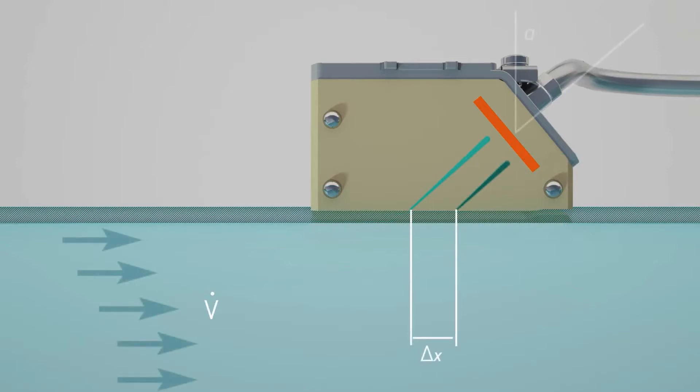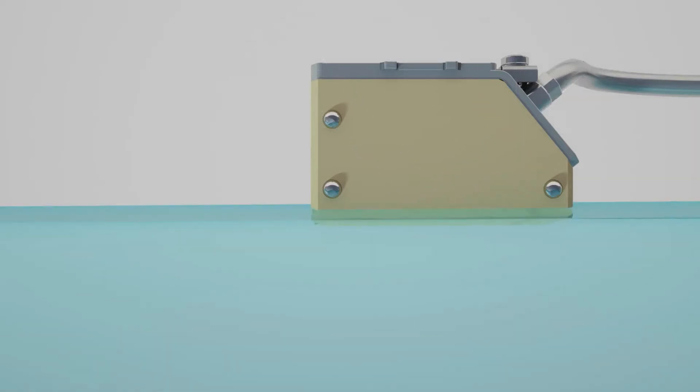Due to the angle alpha of the transducer wedge, this shift causes a decrease of the ultrasonic signal's path length inside the transducer wedge by delta l. This also means a decrease by delta t in the transit time according to the sound speed c-alpha of the transducer wedge. The spatial shift caused by the flow is transformed by the transducer into a time shift. This effect allows for a direct calibration of the transducers.